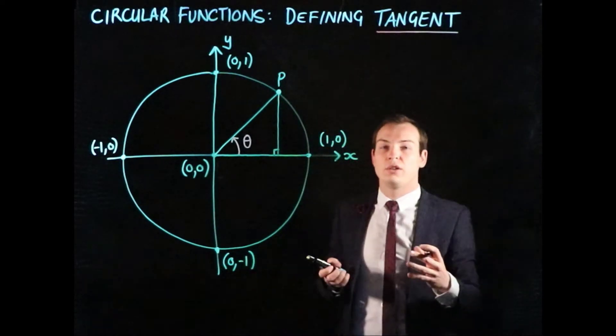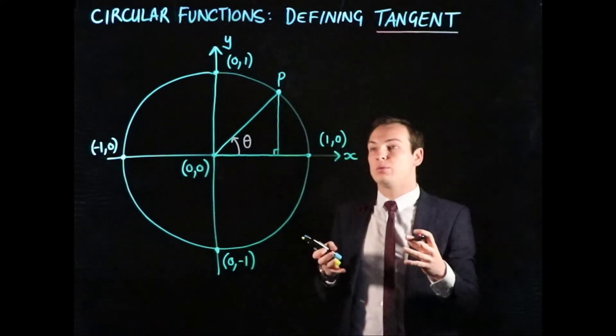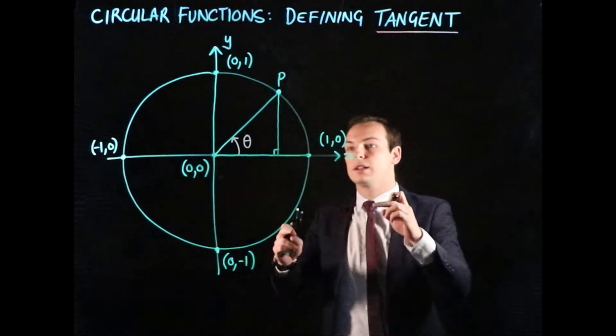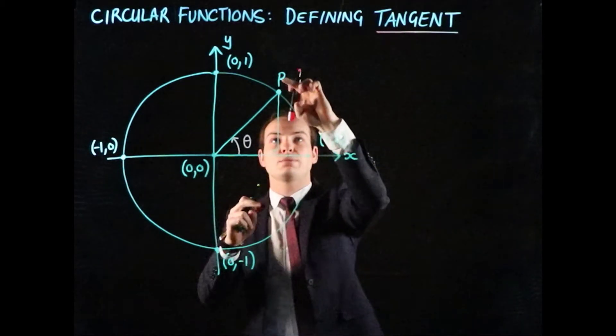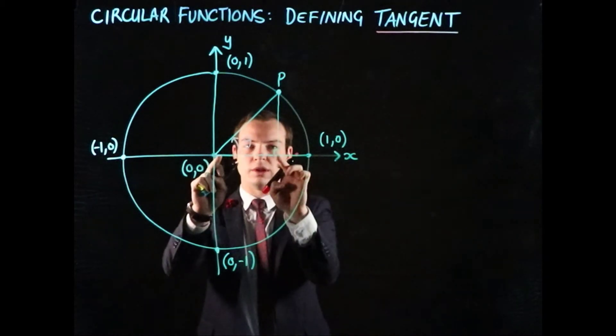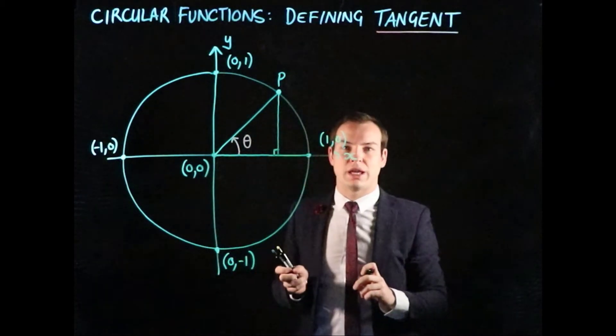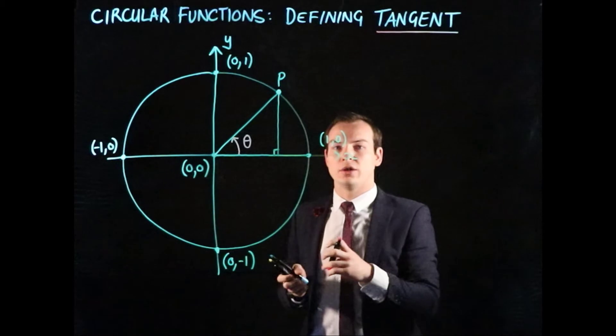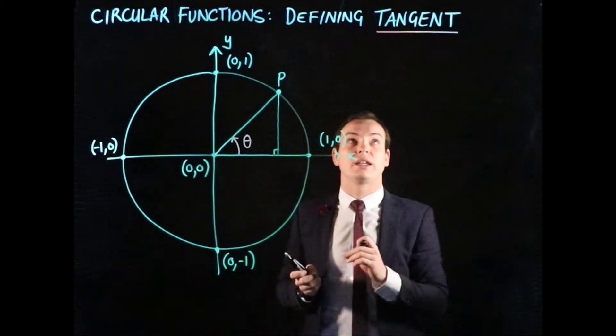Hopefully you've already seen the previous video that showed that sine is the y-value of point P, and cosine is the x-value of that point P. In this video, we want to move on to defining the tangent function.